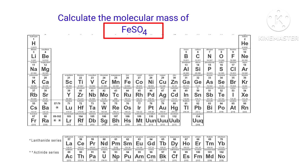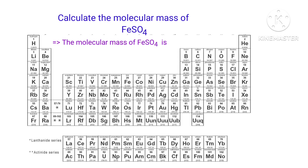In FeSO4, there is 1 iron atom, 1 sulfur atom, and 4 oxygen atoms present. So the molecular mass of FeSO4 is 55.845 plus 32.065 plus 15.999 into 4, that equals 151.906 gram per mole.